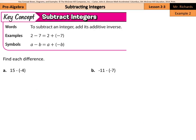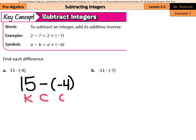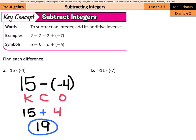Let's continue practicing with a few more examples. We have 15 minus negative 4. If we were to keep change opposite again, we'll keep the 15, change our subtraction into addition, and the opposite of negative 4 is a positive 4. Well, this is just 15 plus 4. Both are positive, so add them together and we get 19 — positive 19.